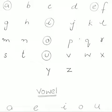آپ نے اپنی copies میں A سے Z تک لکھنا ہے، پھر vowels کو circle کرنا ہے اور vowels کو الگ سے page پر لکھنا ہے۔ Consonants کو — یعنی جو vowels کے علاوہ letters بچ گئے ہیں — ان کو ایک الگ page پر لکھنا ہے۔ کل ہم use of 'a' اور 'an' کروائیں گے، کیونکہ وہ vowels سے related ہے — جو words vowels سے شروع ہوتے ہیں ان سے پہلے ہم 'an' لگاتے ہیں۔